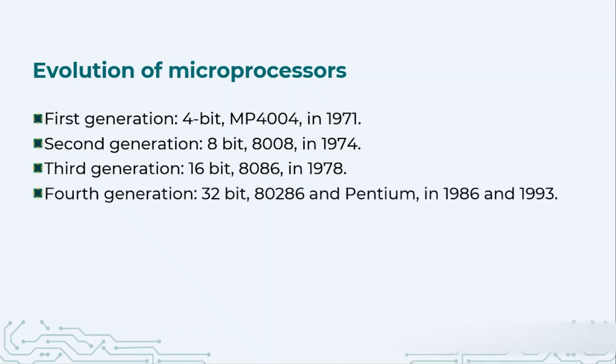In 1986, 80286, and 1993 Pentium processor came. These were the 4th generation of microprocessors and 32-bit microprocessors. This processor, the Pentium processor, really revolutionized the personal computers. Now we were able to perform a lot of general purpose tasks through these microprocessors, and that is the reason that computer came in every home.